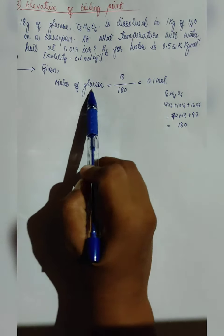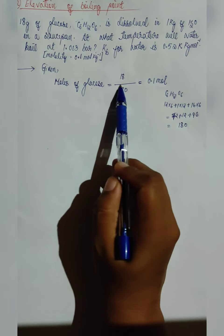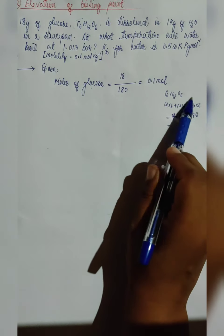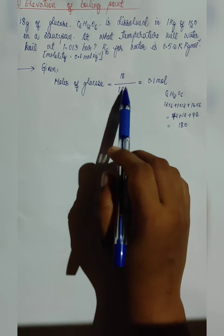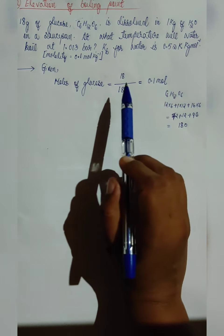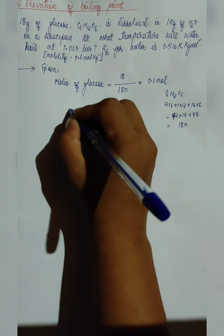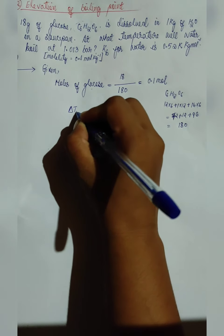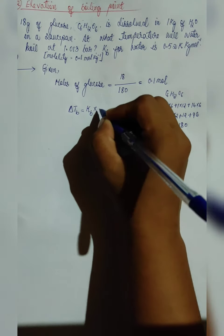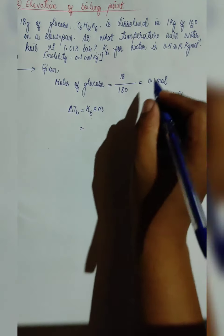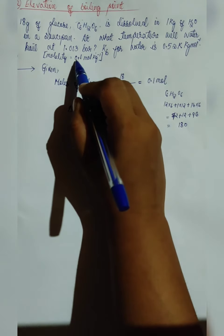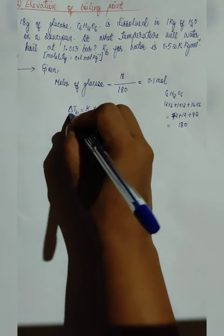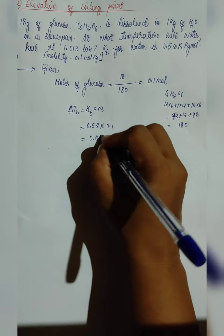Since the mass of glucose is mentioned, moles of glucose equals mass of the component divided by the molecular mass, giving 0.1 mol. We will use the simple formula: delta Tb, elevation of boiling point, equals the proportionality constant Kb multiplied with molality. Kb is 0.52, and molality is 0.1, so delta Tb equals 0.052 K.